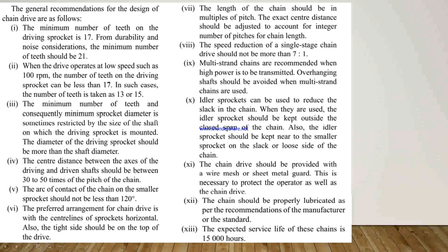Idler sprockets can be used to reduce slack in the chain. When used, the idler sprocket should be kept outside the closed span of the chain and near the smaller sprocket on the slack side. The chain drive should be provided with a wire mesh or sheet metal guard to protect the operator as well as the chain drive. The chain should be properly lubricated as per the recommendations of the manufacturers or standards. The expected service life of these chains is 15,000 hours.